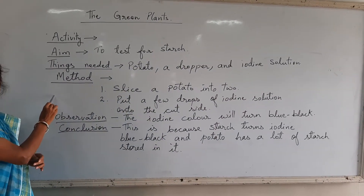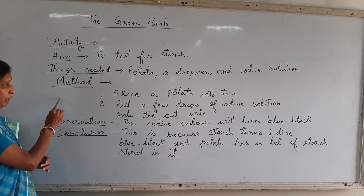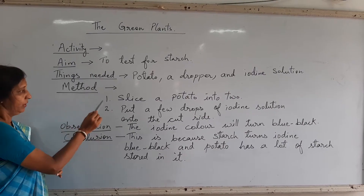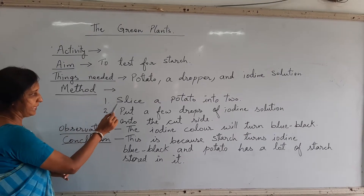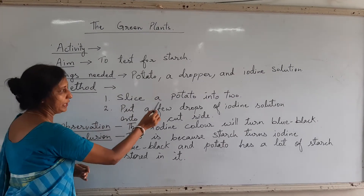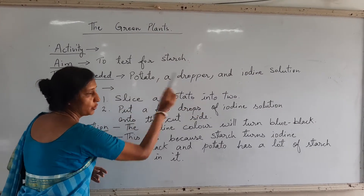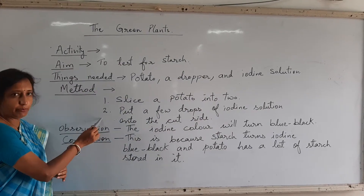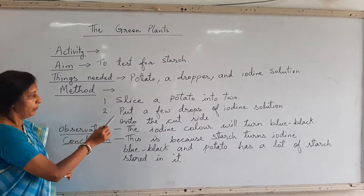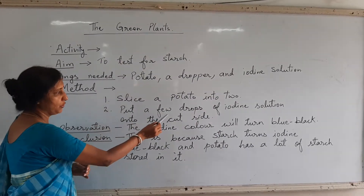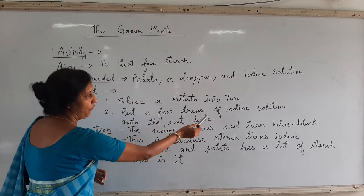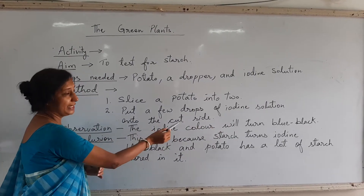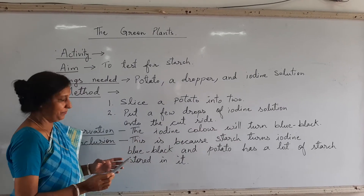Then what will be the method? Let me go through the method for you all. First point: slice the potato into 2. The second point: put a few drops of iodine solution onto the cut side.